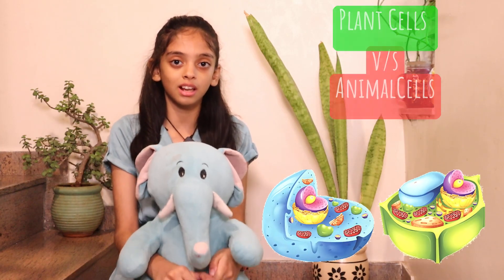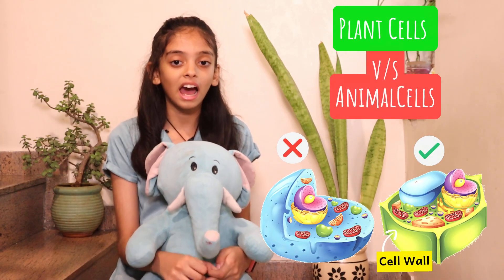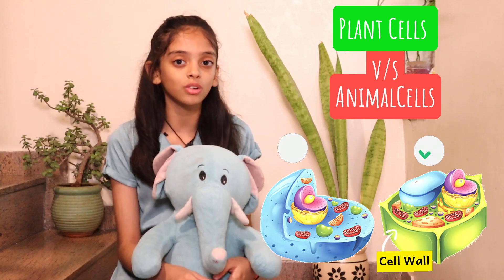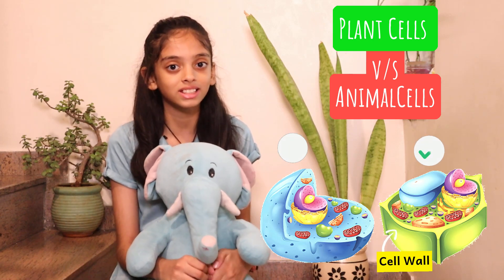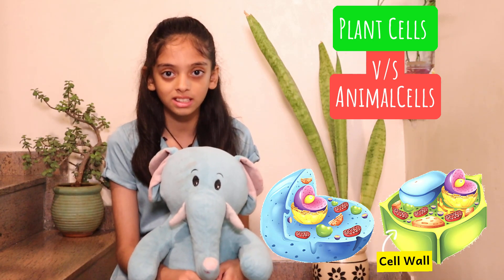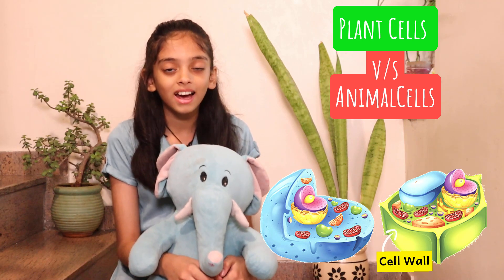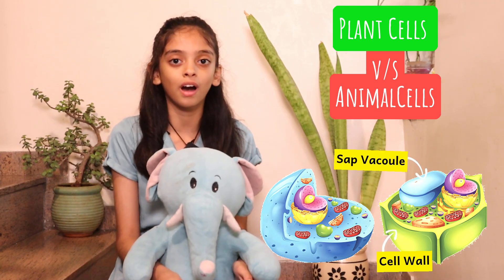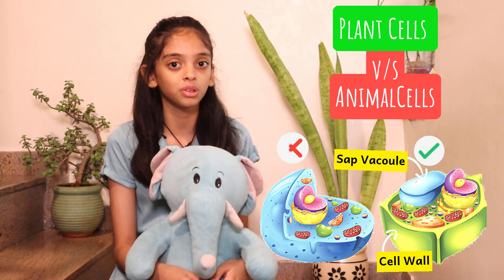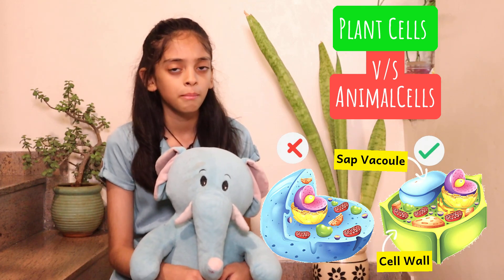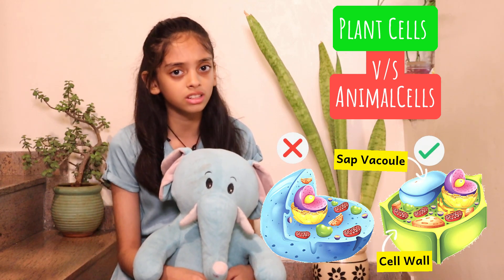Now that I've covered plant cells and animal cells, let's quickly see the differences between both. Plant cells have rigid cell walls, but animal cells don't — instead they have cell membranes. Plant cells also have large sap vacuoles which they use to store nutrients, but animal cells don't.